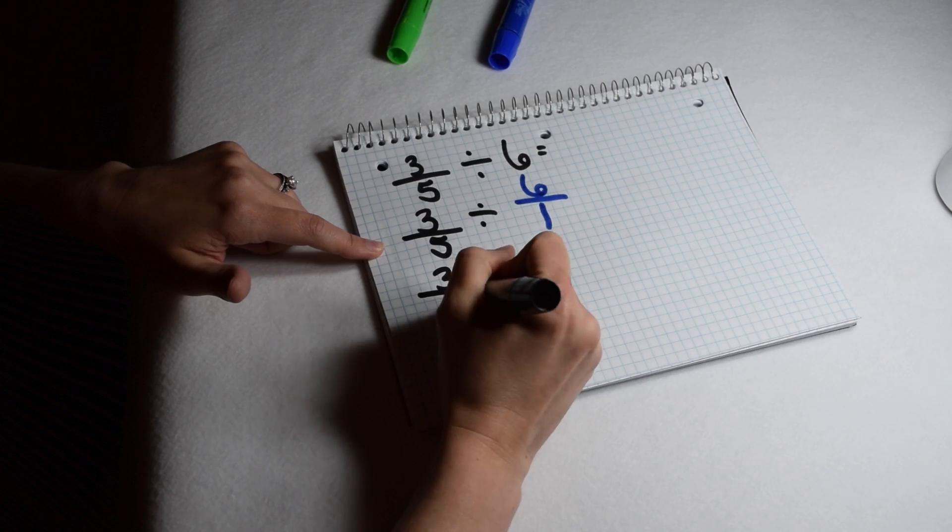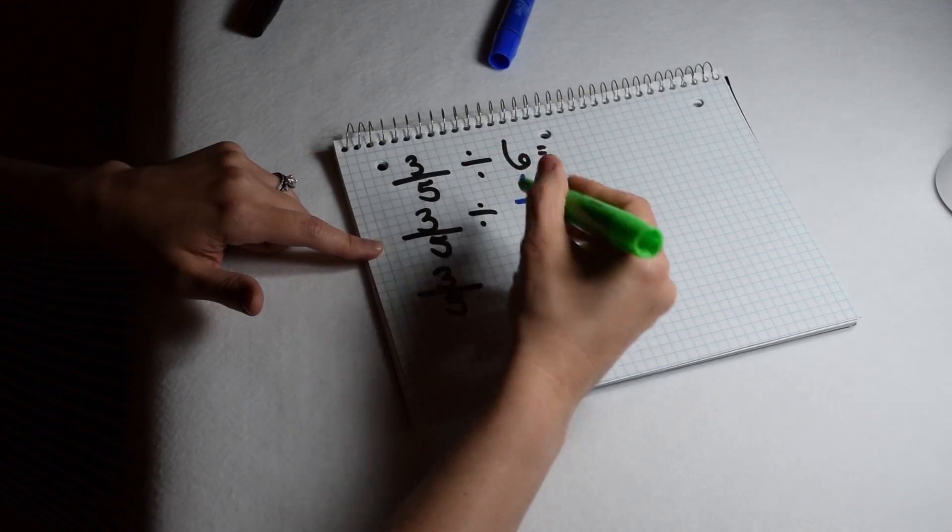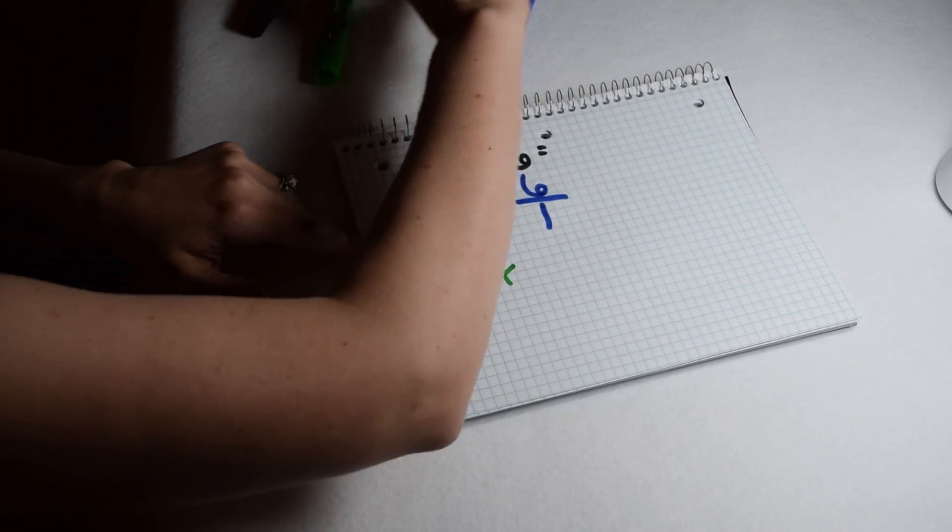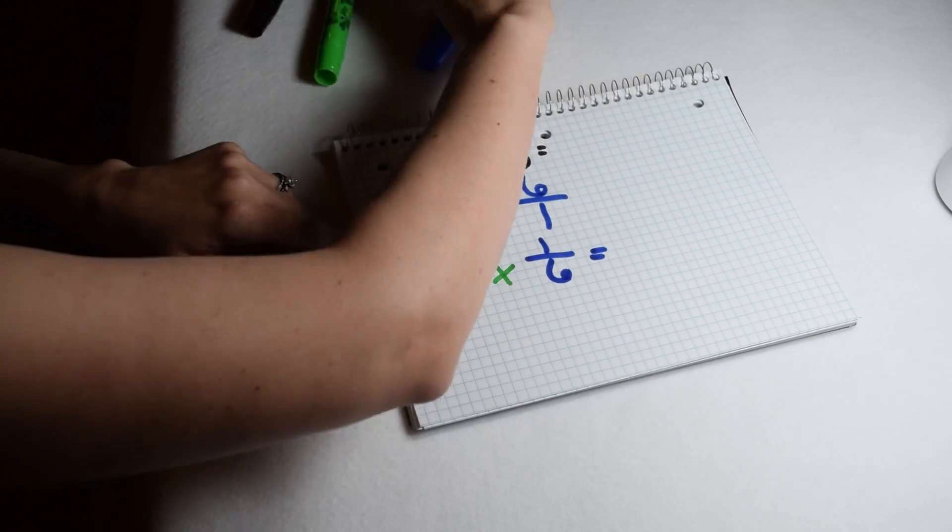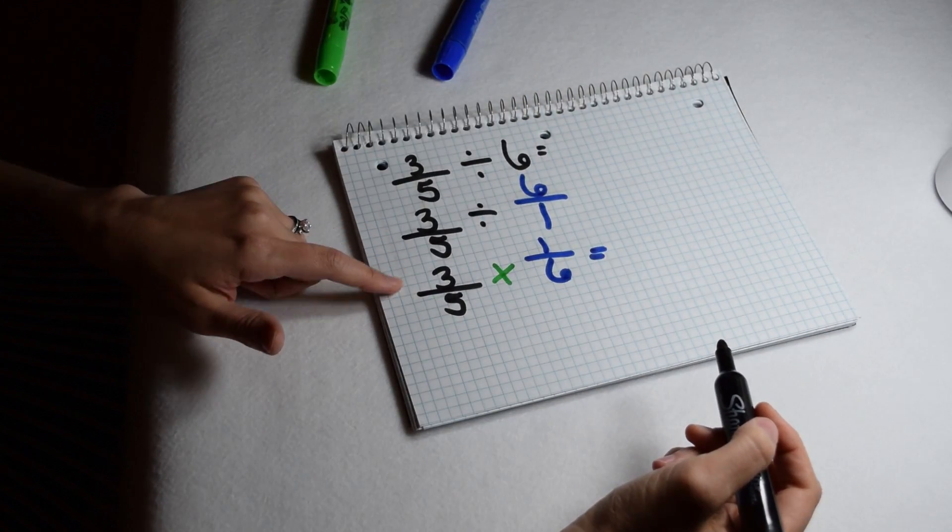To do that, our dividend of three fifths is going to stay the same. Our division sign is going to change to a multiplication sign, and we need to take the reciprocal of six over one, which is one sixth. Now we can focus on following our multiplying fraction rules.